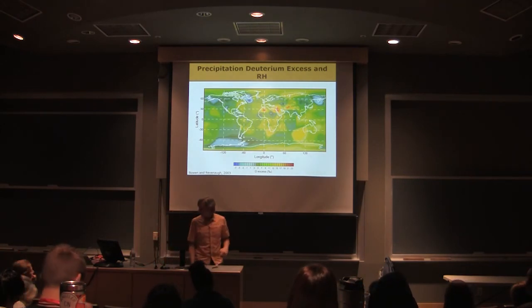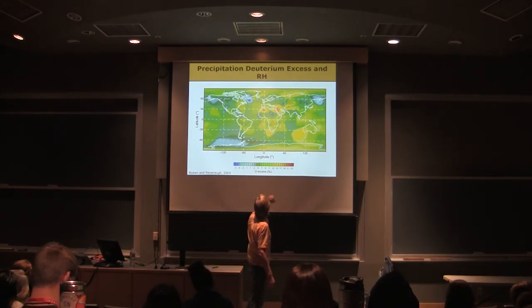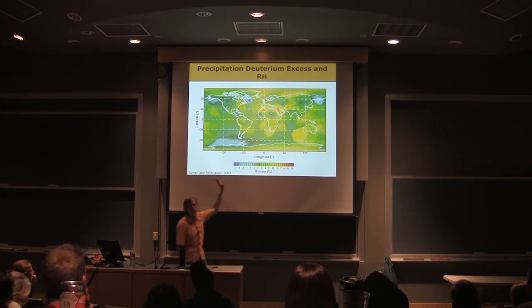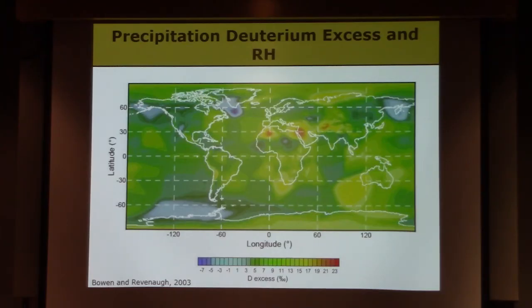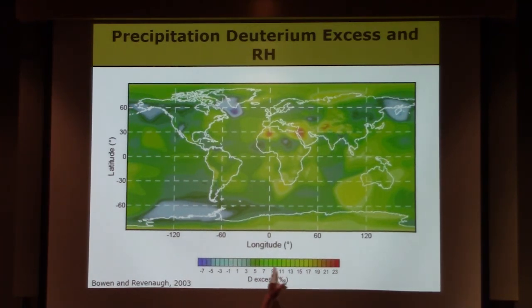Here's a map of d-excess, and in the interest of time, we won't talk about it too much, but this is precipitation d-excess interpolated from precip observation stations over the globe. And what you can see is the d-excess varies a decent amount. On the whole, it averages about plus 10, but we have places where it's quite a bit higher and places where it's quite a bit lower.